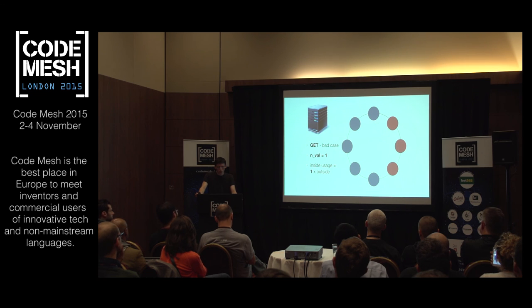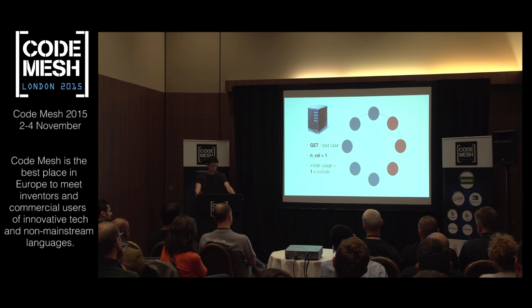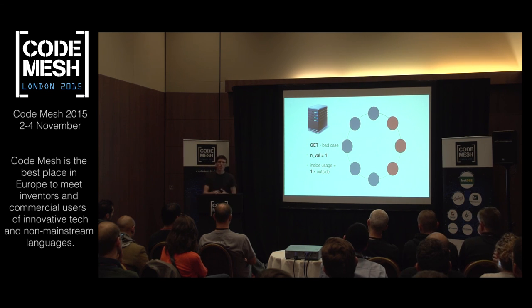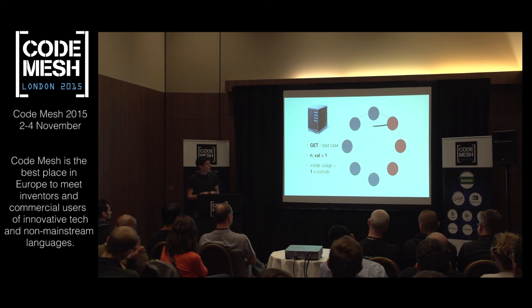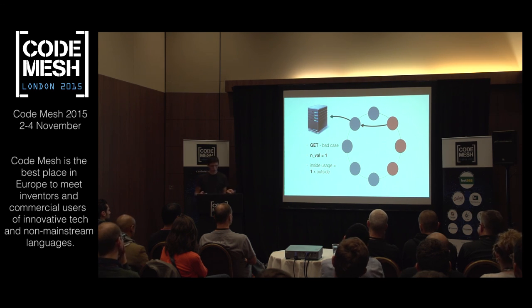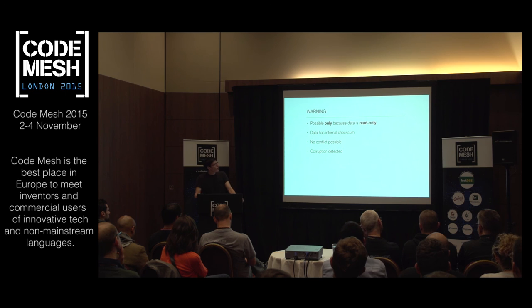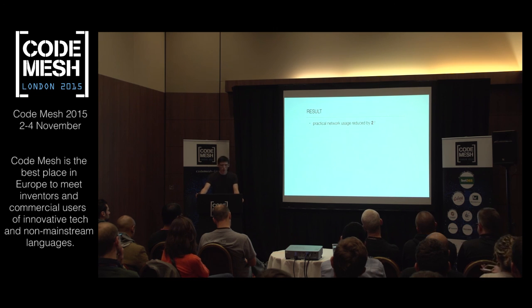One solution is to use the little-known parameter 'nval=1' when fetching from Riak. This tells Riak to consider that you have only one replica, not the default three. Riak then fetches from only one primary node, and if you happen to be on a primary node the data uses no internal network at all. This works only because our data is read-only — there are no conflicts — and we have checksums to detect corruption. In practice, network usage was divided by two — a huge gain.